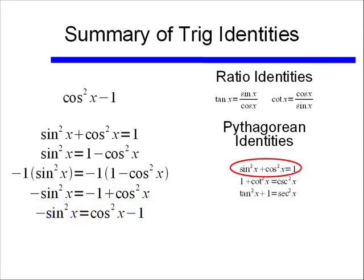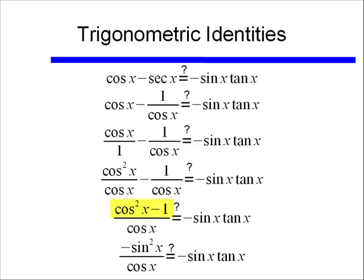Knowing that, I can go back to my problem, and I'll replace cosine squared x minus 1 with negative sine squared x. Alright, I think I've done everything I can to my left hand side of the equation.